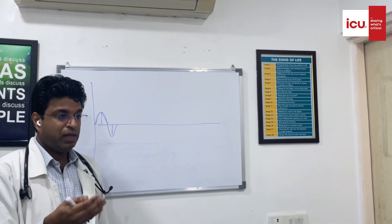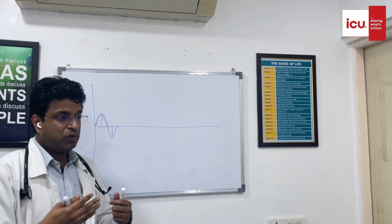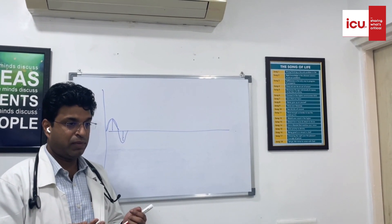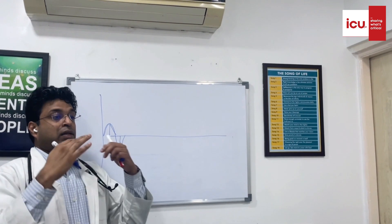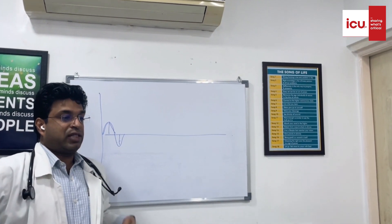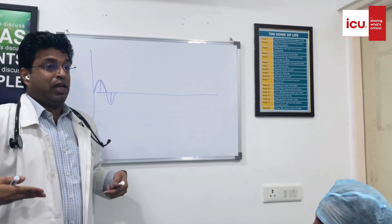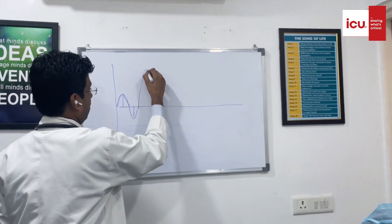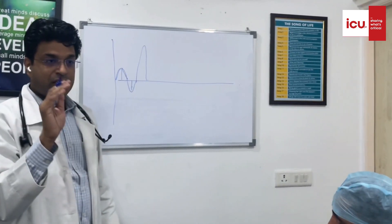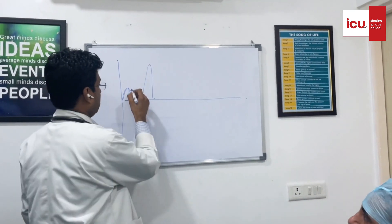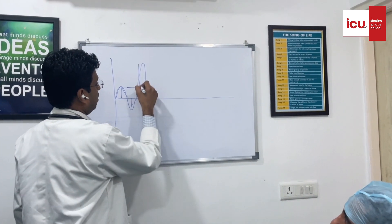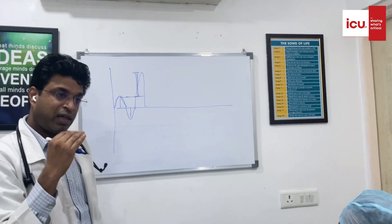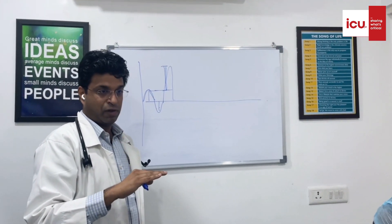Now when you inhale with maximum force, the amount of air which you can inhale beyond a normal breath — taking a deep breath — the maximum amount of air which you can inhale is your inspiratory reserve volume. This much amount of air you can inhale after a normal inspiration, and this is your inspiratory reserve volume.